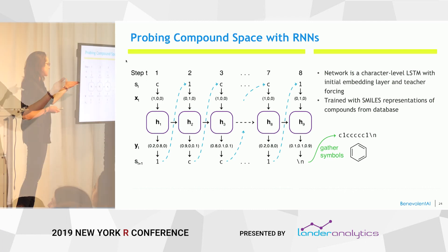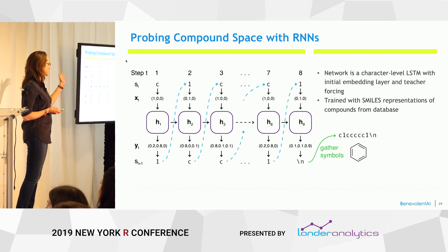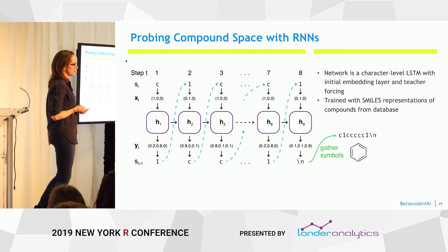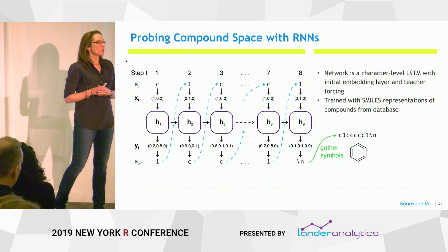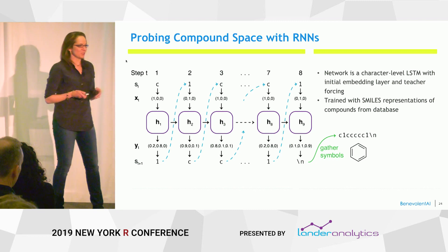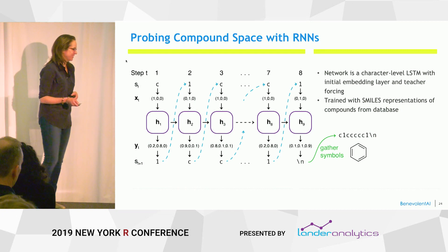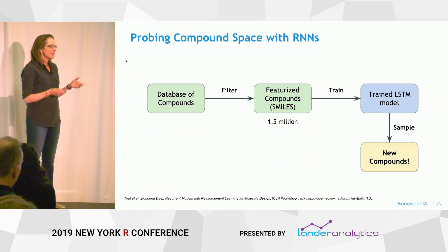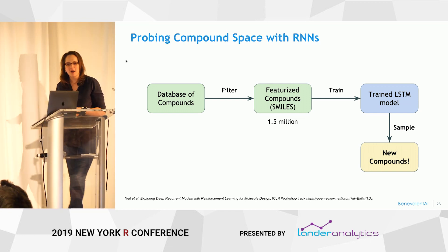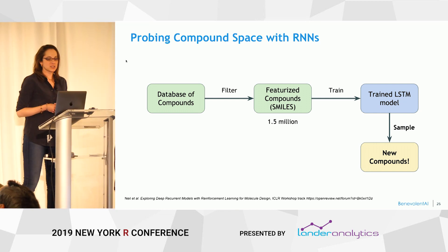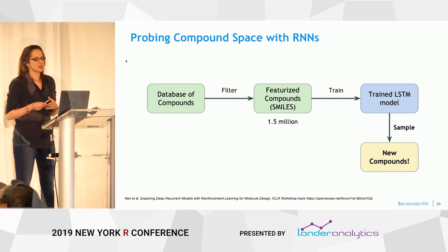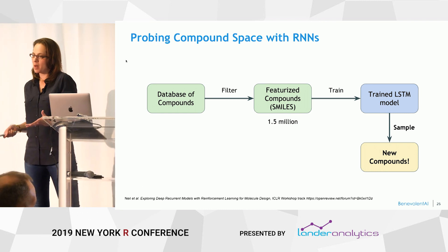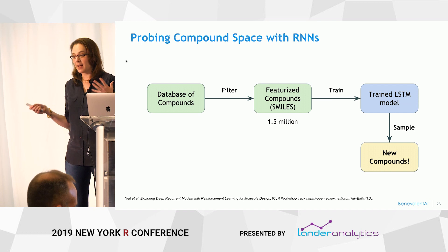The termination is its own character — that's how we know when it's done with the compound. C1CCC1 with a terminator is effectively a compound called benzene, which hopefully is not what's coming out of our model because it's a carcinogen, but it's easy to draw. So we use our database of compounds, featurize them with SMILES, do a little bit of selection off of the public database, then train this LSTM model and get new compounds.